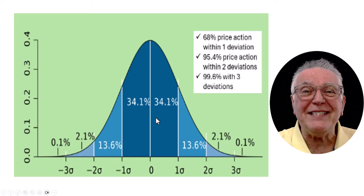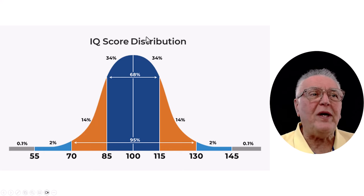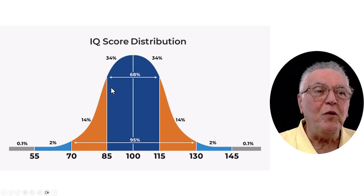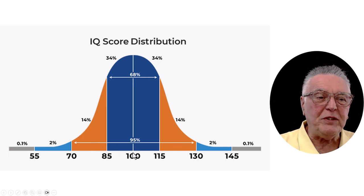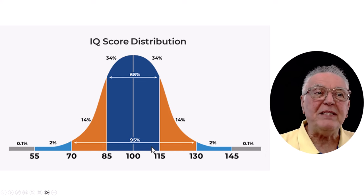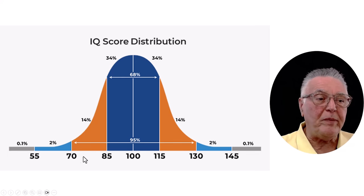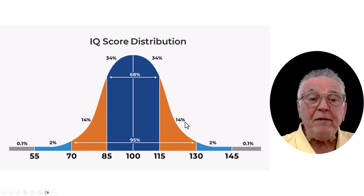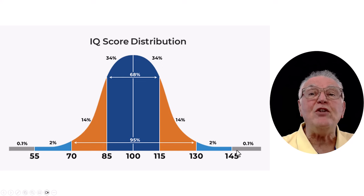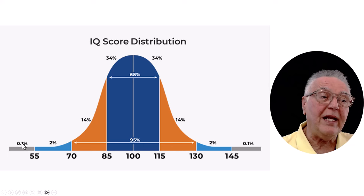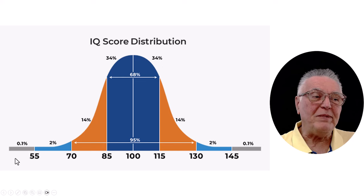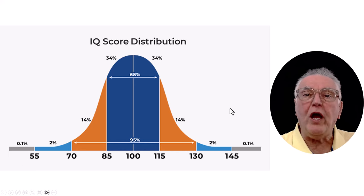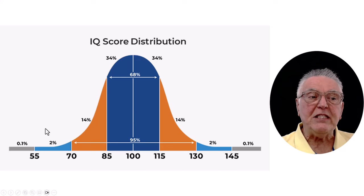This concept gets used all over the place. Here's an example with IQ tests that have the same basis: 68% of the population falls within that middle IQ level, 95% falls within two deviations, and 99% within three deviations. Only the absolute genius — or the opposite — makes up that less than one percent. This applies whenever you have a large enough sample of readings.